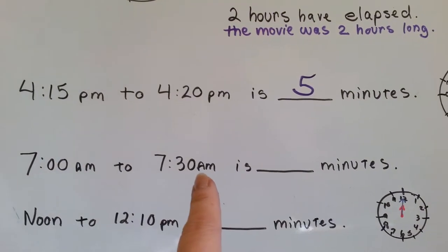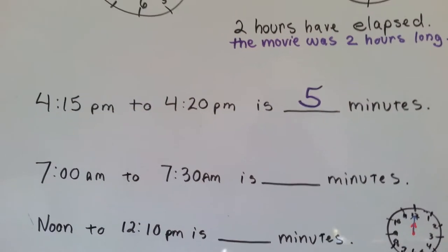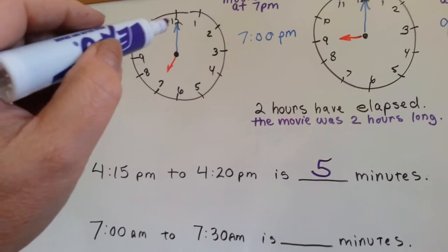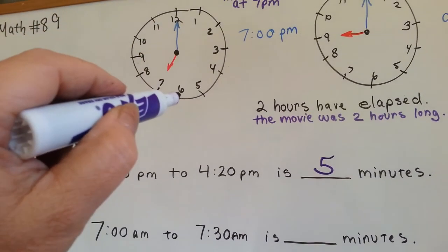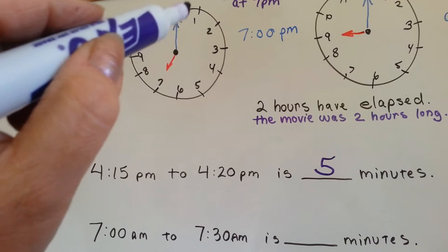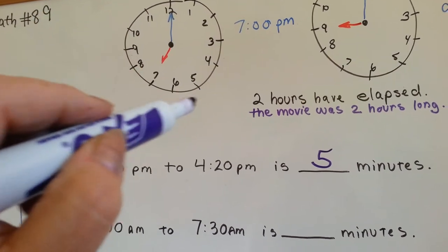From 7 a.m. to 7:30 a.m. is how many minutes? 5, 10, 15, 20, 25, 30.